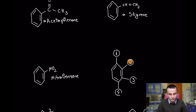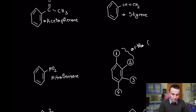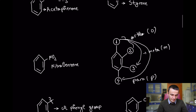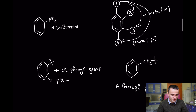Position 1 with position 2 is called ortho, or 'o'. Position 1 with position 3 is called meta, or 'm'. Position 1 with position 4 is called para, or 'p'. If you remove a hydrogen from benzene, the resulting group is called a phenyl group.